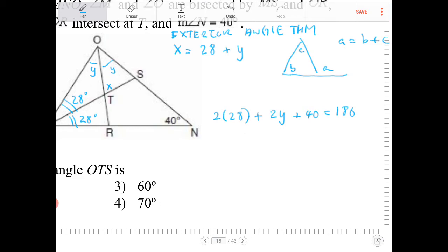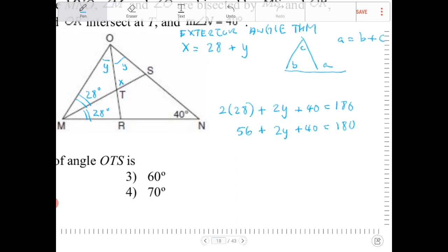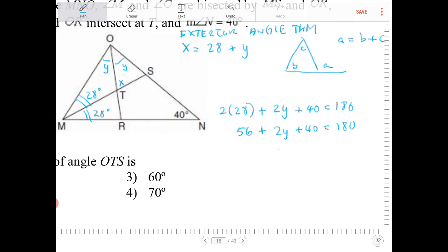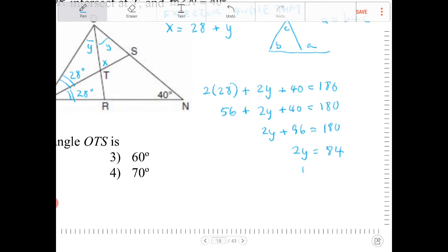So what I end up with is 56 plus 2Y plus 40 equals 180. If I add 56 and 40 together, I end up with 2Y plus 96 equals 180. Subtract both sides by 96, I end up with 2Y equals 84. Divide both sides by 2, Y equals 42.